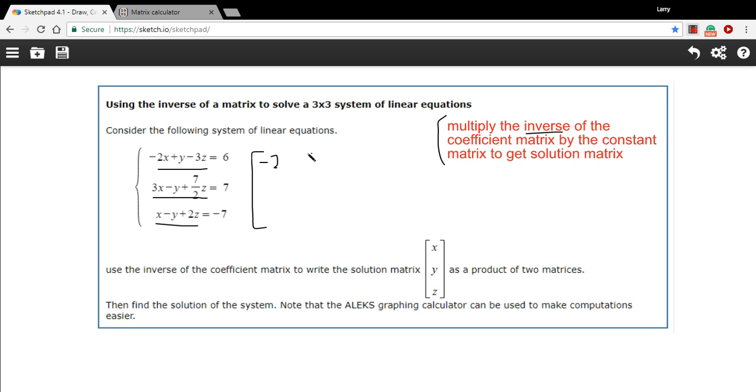So negative 2, 1, negative 3, 3, negative 1, and 7 halves, and 1, negative 1, and 2. So that is our coefficient matrix.